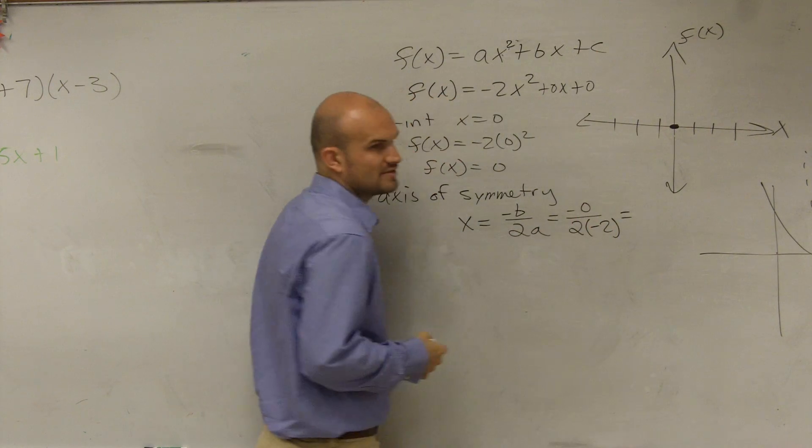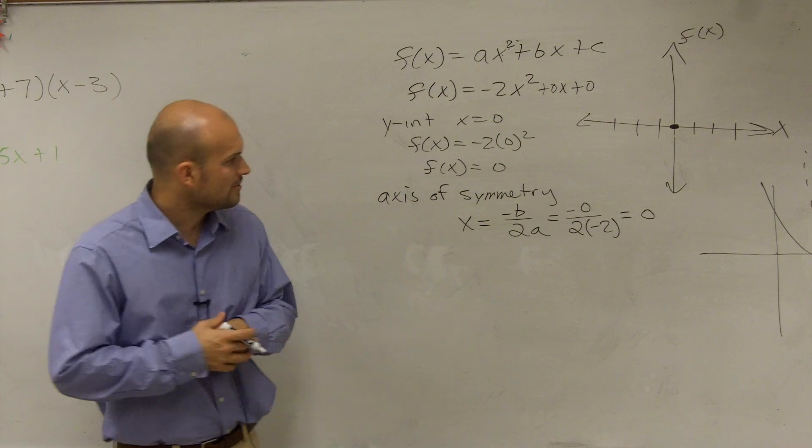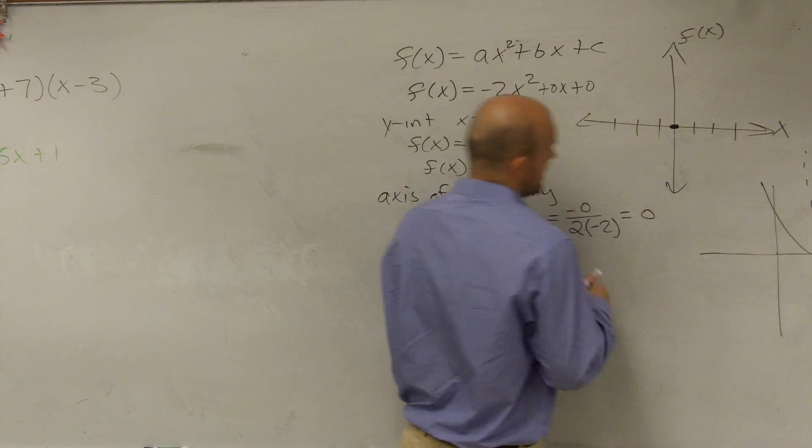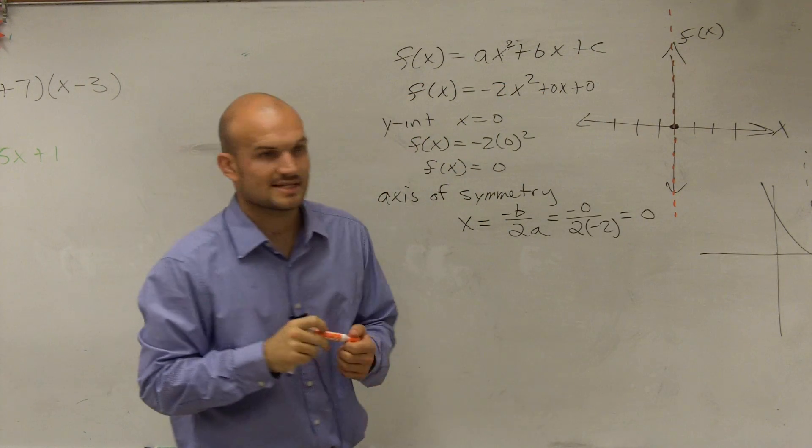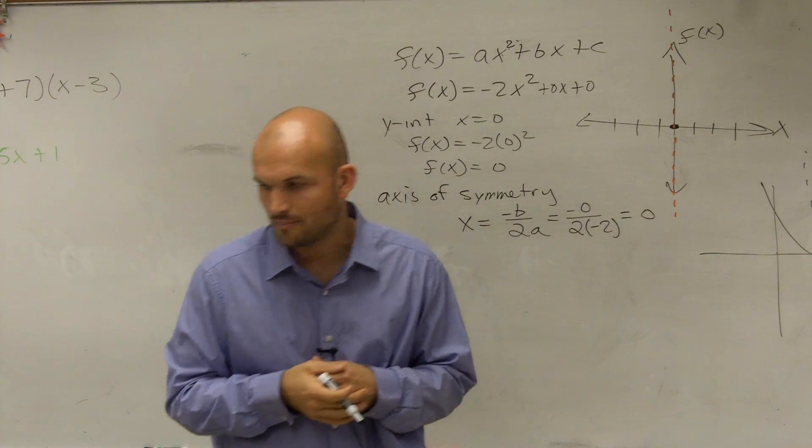So really, what I have is -0 divided by 2 times -2. Well, 0 divided by anything is always going to equal 0. So therefore, my axis of symmetry is at 0. So I really actually have a dotted line at 0. So that's going to be my axis of symmetry. That's what's going to cut the parabola up and down.